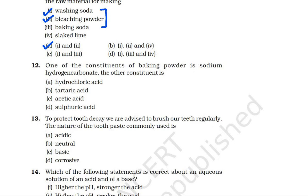The second part: one constituent of baking powder is sodium hydrogen carbonate, and the other constituent is tartaric acid. So if you are using baking powder in the production of a cake, there is a pinch of tartaric acid in it, because tartaric acid keeps it mild.